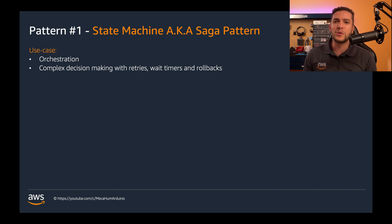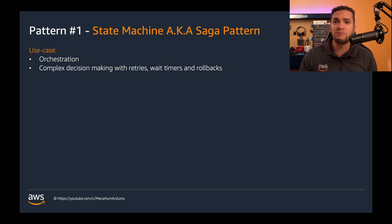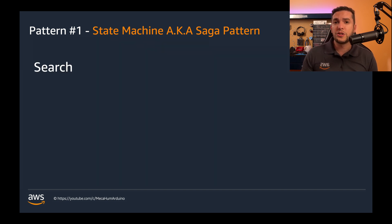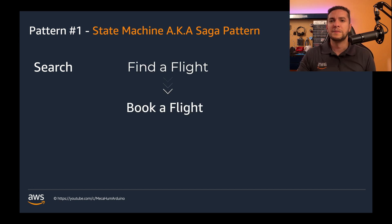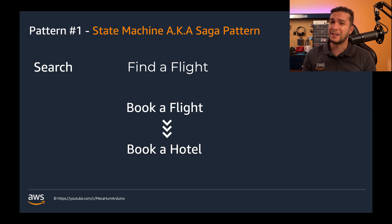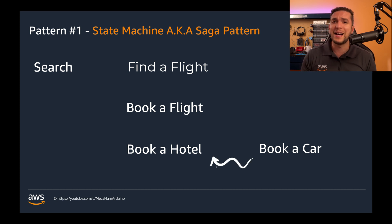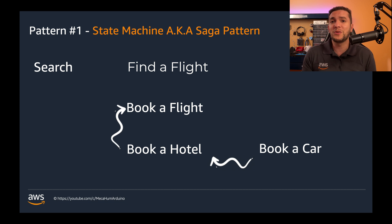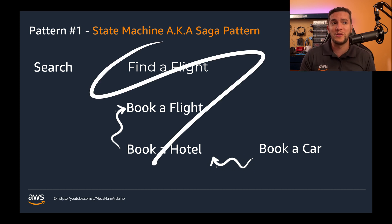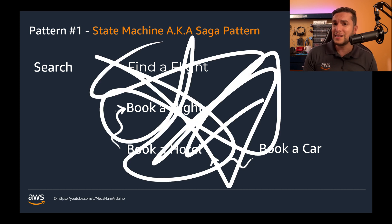For example, building an application to help users plan a trip. Your application should allow them to search and find a flight, book the flight, then book a hotel room and probably a car. But if no car is available, they probably want to roll back and choose a different hotel or a different airport, or maybe not go to that city at all.